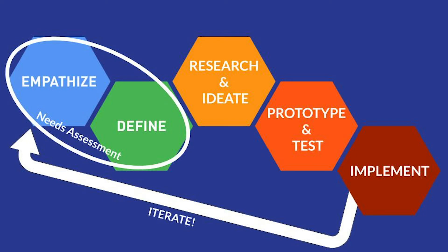The sustainable design process starts off with a needs assessment and then moves into research, ideation, prototyping, testing, and finally implementation. After implementation, you'll get feedback from the community that will result in a new needs assessment, so it loops back around and iterates.